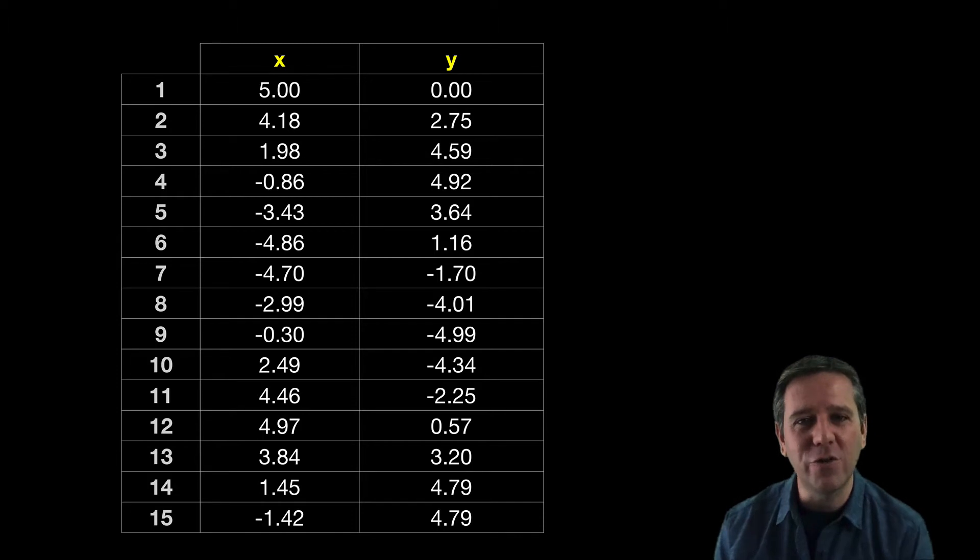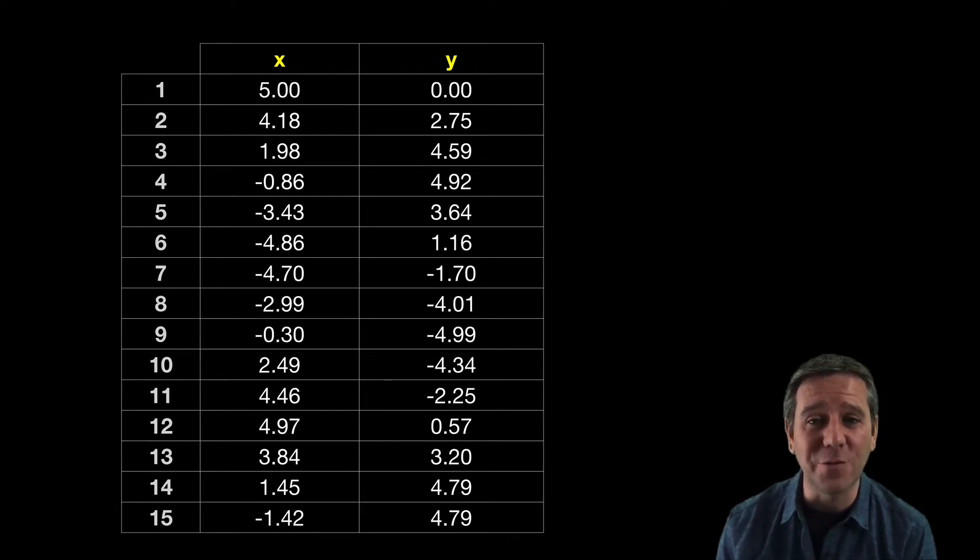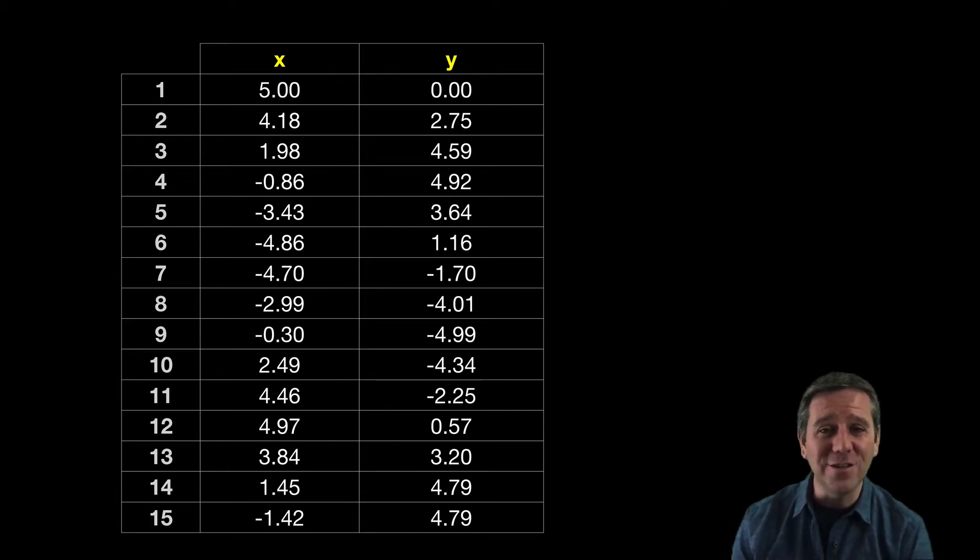So that's an extreme example. Let's look at the other extreme. Let's look at a teeny tiny data set here with only 15 rows or observations on two columns or variables, X and Y. Remember in bioinformatics we'll often have thousands and thousands of data points. So this should be easy, right?